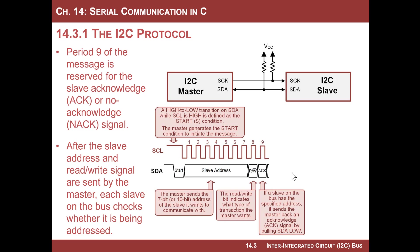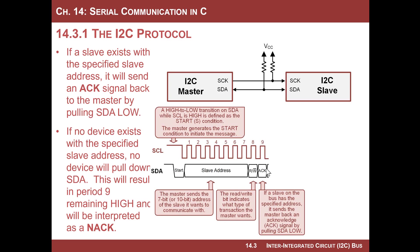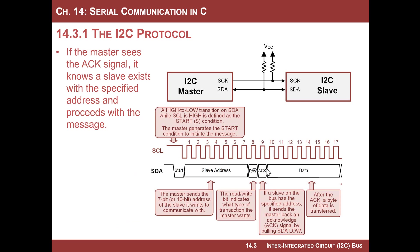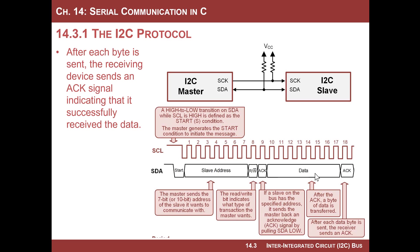Assuming a slave was present and acknowledged the master, the master then sends data — periods 10 through 17 represent 8 bits of data. Data could be going to the master or to the slave depending on whether it's a read or write, but we're looking at the basic structure. After the data, at period 18, the slave acknowledges with an ACK. Every time information is sent, there's an ACK — indicating the message was received successfully. There are always ACKs after every transaction.